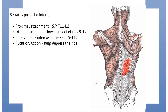The serratus posterior inferior. Its proximal attachment is the spinous process of T11 to L2, and its distal attachment is the lower aspect of ribs 9 to 12. This muscle is innervated by the intercostal nerves of T9 to T12. This muscle helps to depress the ribs.